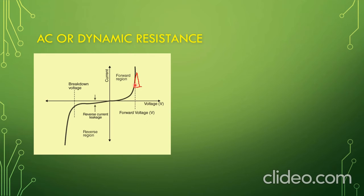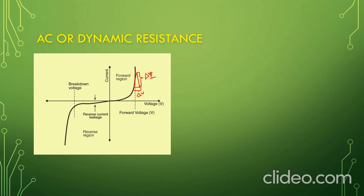On the graph, this side is parallel to the current axis and this side is parallel to the voltage axis. If we call this side delta V and this side delta I, then the ratio delta V divided by delta I gives us the AC or dynamic resistance of a PN diode from the graph.